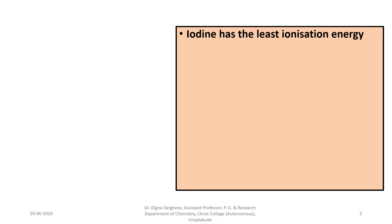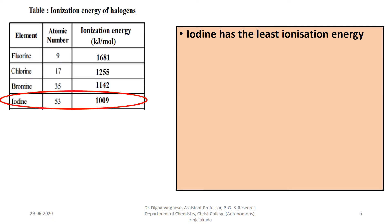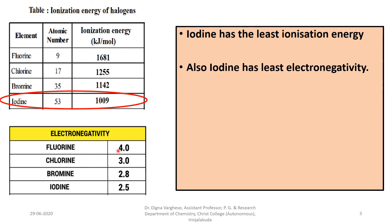Iodine has the least ionization energy among halogens from fluorine to iodine, with a value of only 1009 kilojoules per mole. Iodine also has the least electronegativity among these halogens — the most electronegative element is fluorine with a value of 4, while iodine has only 2.5. Because of these two values, iodine is the most electropositive element among halogens from fluorine to iodine.